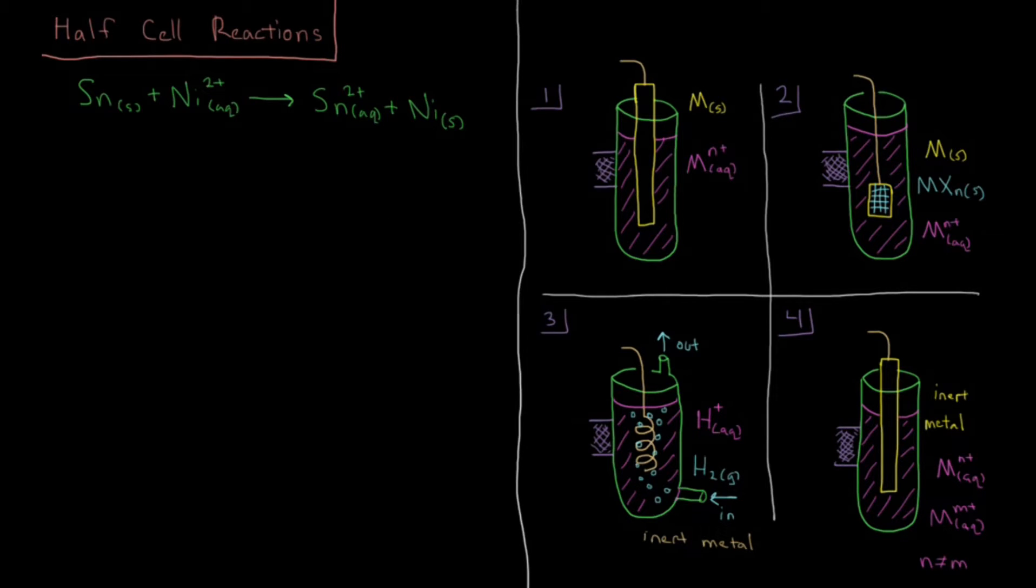In this video we're going to look at how we can break electrochemical cells down into two half cells and look at the individual reactions occurring at those half cells.